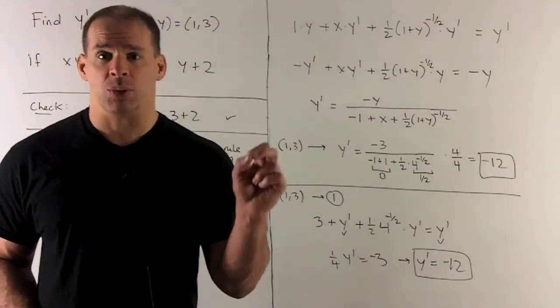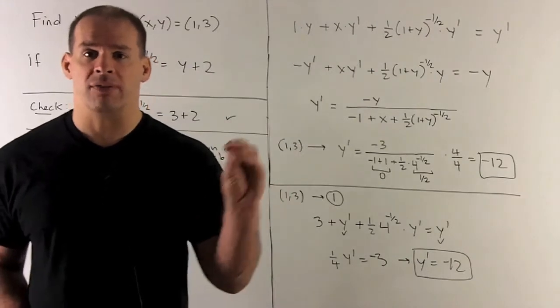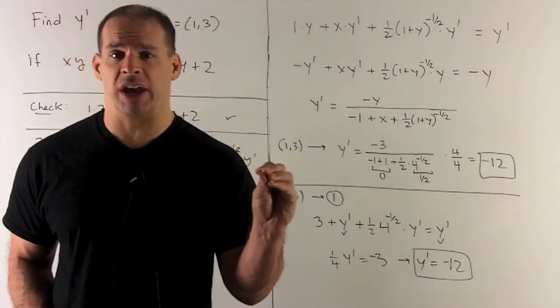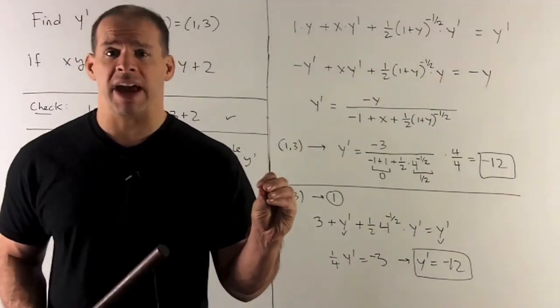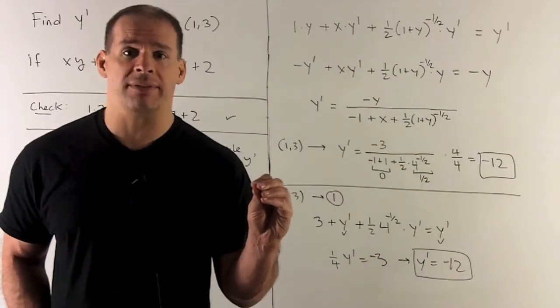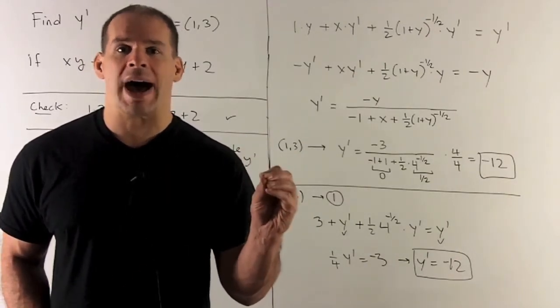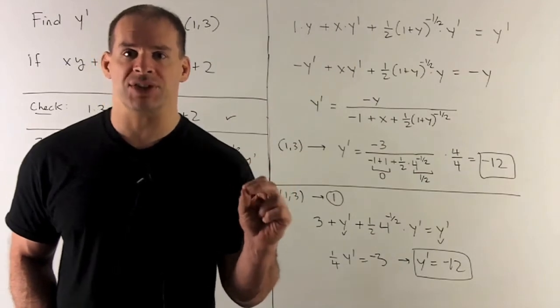Then I have one plus y to the one half. So we cover up the one plus y. This is going to be chain rule. Bring the one half down. Subtract one gives me minus a half. Put our inside back in, which is one plus y. And then I multiply by the derivative of the inside.